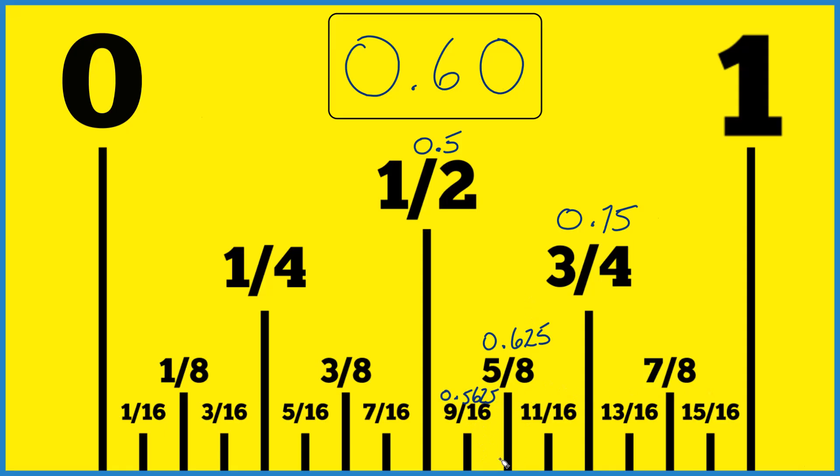So it looks like our 0.6 is going to be closer to 0.625, probably right about here. That's not perfectly exact, but it's pretty close to 5 eighths of an inch, a little bit less there.